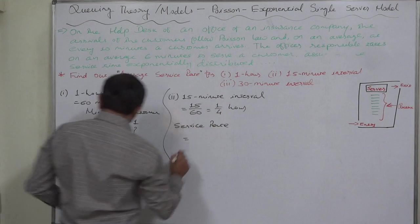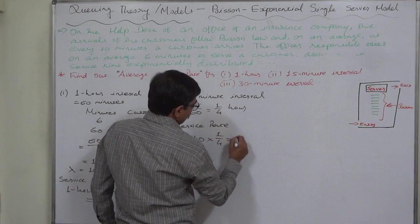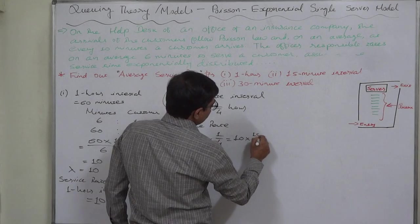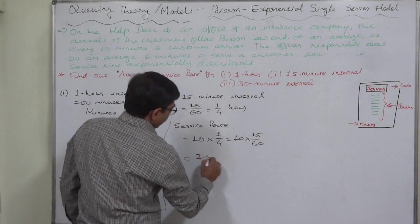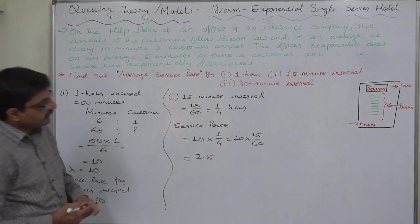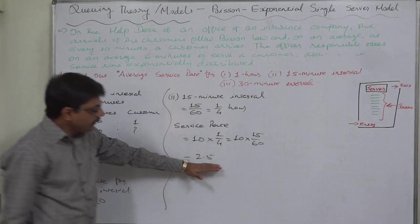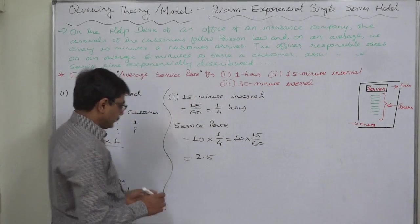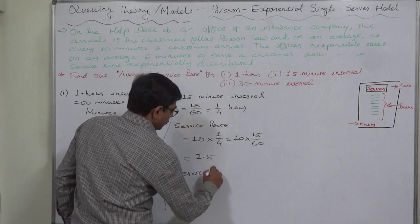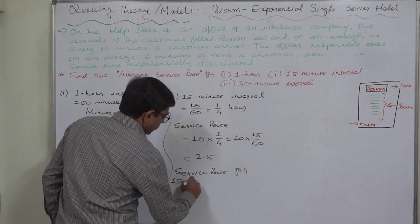Hourly rate 10 into one-fourth hour, or 10 into 15 minutes by 60 minutes, that will be 2.5. So we can conclude that the officer can serve on average 2.5 customers per 15 minute interval. Service rate for 15 minute interval comes to 2.5.